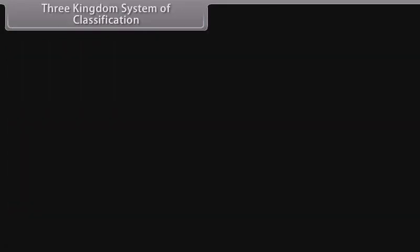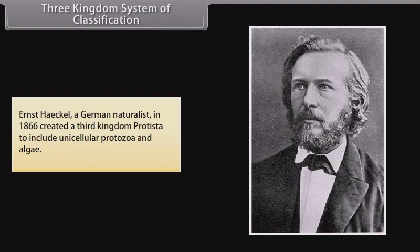Three Kingdom System of Classification: Ernst Haeckel, a German naturalist, in 1866 created a third kingdom, Protista, to include unicellular protozoa and algae.